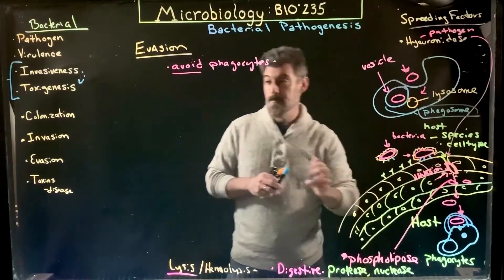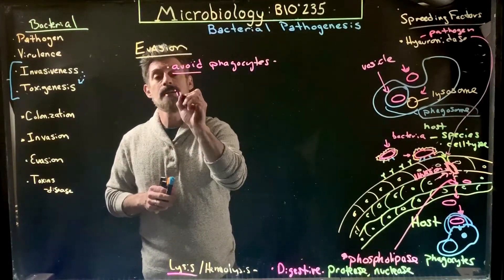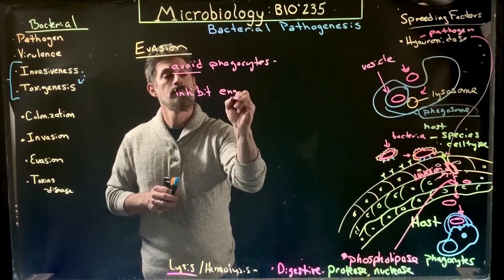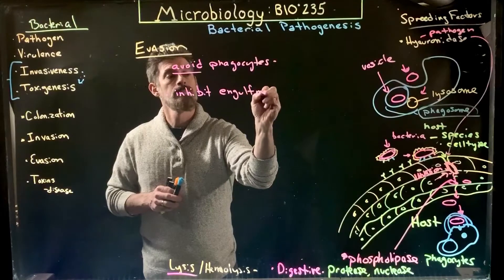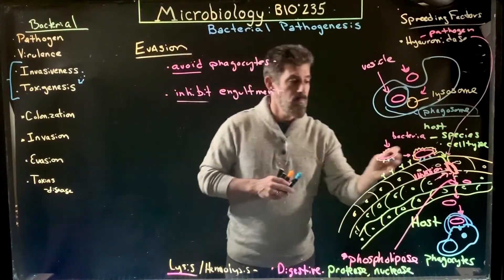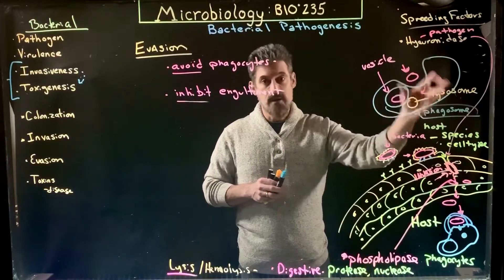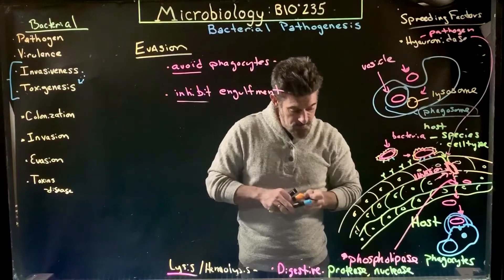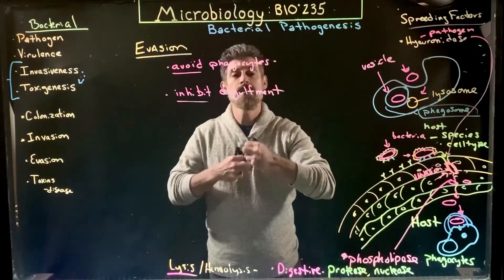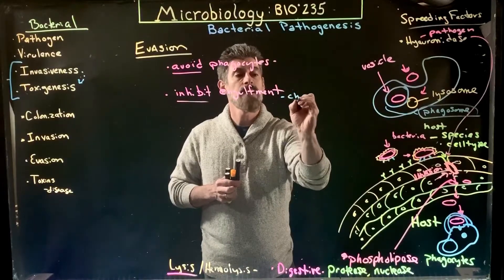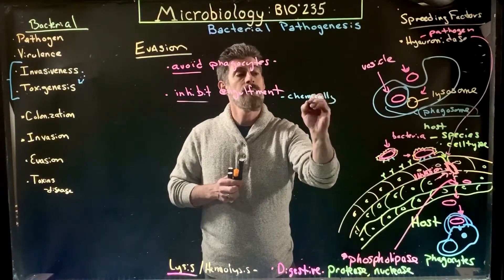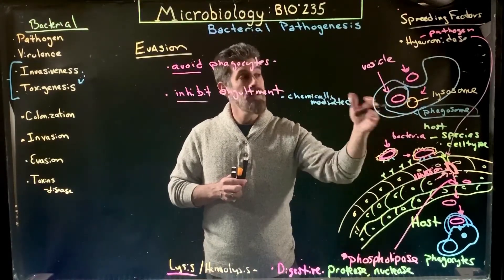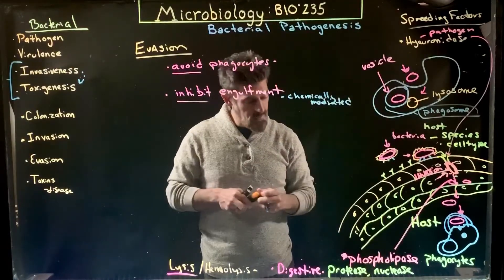The next step is you can inhibit engulfment. When the phagocyte is going to start to engulf or phagocytize the bacterial cell, some can prevent that or stop it from happening. Some can actually use specific chemicals, so it's a chemically mediated process that might block that from happening and prevent the cell from being able to actually engulf them.